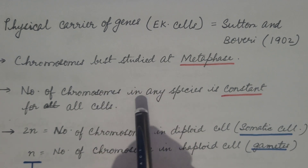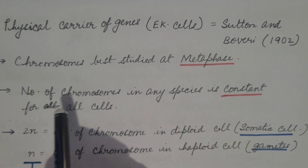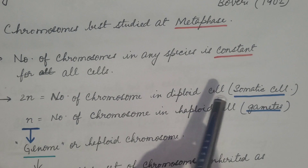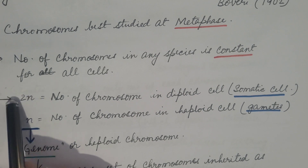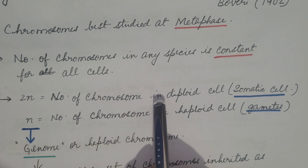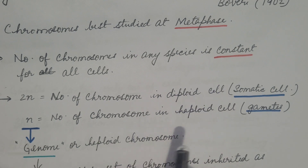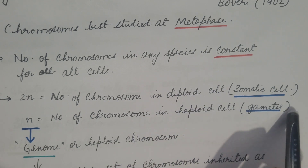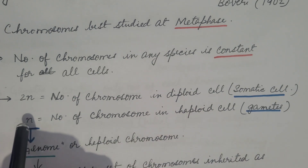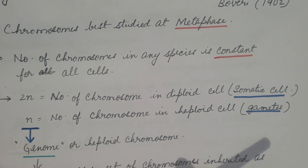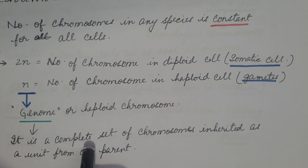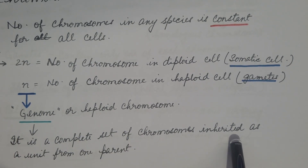In somatic cells, the number of chromosomes is diploid, represented as 2n, and these cells are known as diploid cells. In gametes, these are haploid cells with a haploid number of chromosomes, represented as n. 'n' is also known as the genome or haploid chromosome number — it is actually the complete set of chromosomes inherited as a unit from one parent.